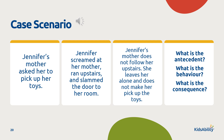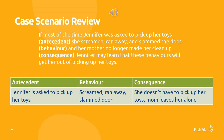Let's look at another example. Jennifer's mother asked her to pick up her toys. Jennifer screamed at her mother, ran upstairs, and slammed the door to her room. Jennifer's mother does not follow her upstairs — she leaves her alone and does not make her pick up her toys. What is the antecedent? What is the behavior? What is the consequence? Jennifer learned that screaming, running away, and slamming the door gets her out of picking up her toys.